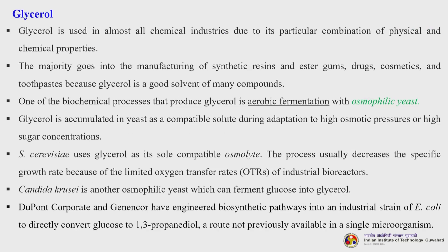The next product — often a byproduct — is glycerol. Glycerol is one of the most important byproducts with many commercial applications from the biodiesel industry, and is also produced during microbial conversion processes. Glycerol is used in almost all chemical industries due to its particular combination of physical and chemical properties. The majority goes into manufacturing of synthetic resins and ester gums, drugs, cosmetics and toothpaste. One biochemical process that produces glycerol is aerobic fermentation with osmophilic yeast. Glycerol is accumulated in yeast as a compatible solute during adaptation to high osmotic pressures or high sugar concentrations. Saccharomyces cerevisiae uses glycerol as its sole compatible osmolyte, though this process decreases specific growth rate due to limited oxygen transfer rates of industrial bioreactors.